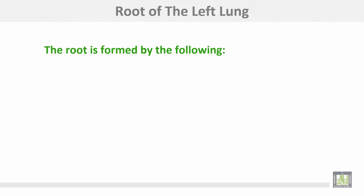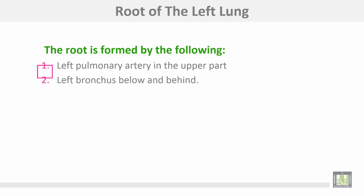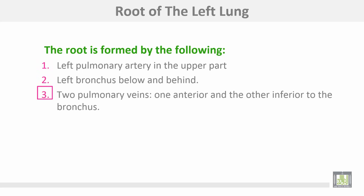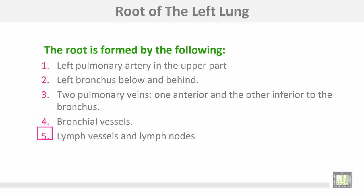The root of the left lung is formed by the following: the left pulmonary artery in the upper part, the left bronchus below and behind, two pulmonary veins — one anterior and the other inferior to the bronchus — bronchial vessels, lymph vessels and lymph nodes, and pulmonary nerve plexuses.